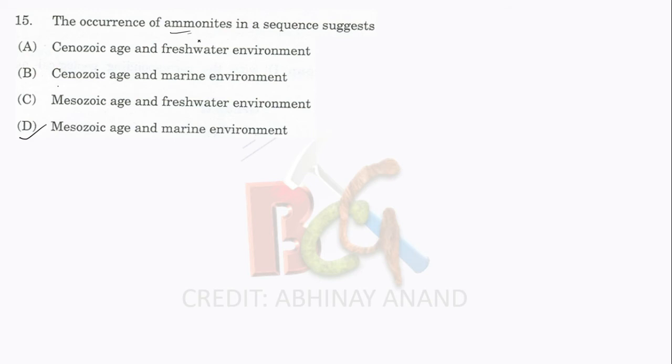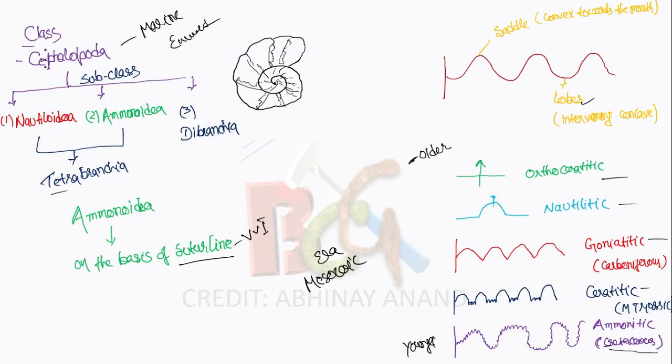I will tell you about ammonites. Ammonites belong to the class Cephalopoda, which includes Nautiloidea, Ammonoidea, and Dibranchia. Nautiloidea and Ammonoidea are called Tetrabranchia. On the basis of suture line, we define the Ammonoidea in different categories. Suture line is very important for ammonites. The suture line is the contact between septa in different segments of the ammonite shell.